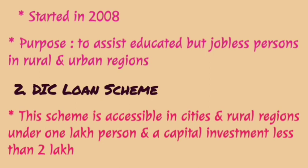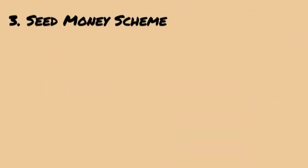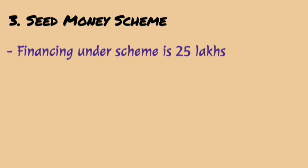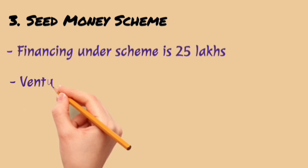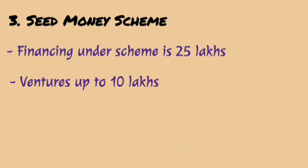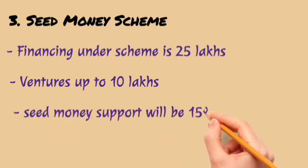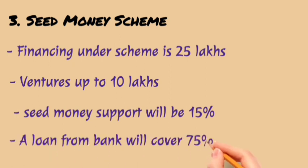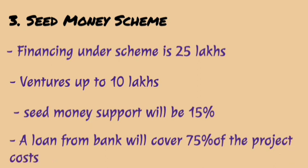The third scheme is called the Seed Money Scheme. Under this scheme, financing provided can be up to 25 lakhs, and ventures can go up to 10 lakhs — meaning the DIC industry can take risk up to 10 lakhs. Under this scheme, DIC provides Seed Money support of 15%. Seed Money is the early-stage fund provided when a new business starts. The total project cost is covered 75% by the bank under the Seed Money scheme.